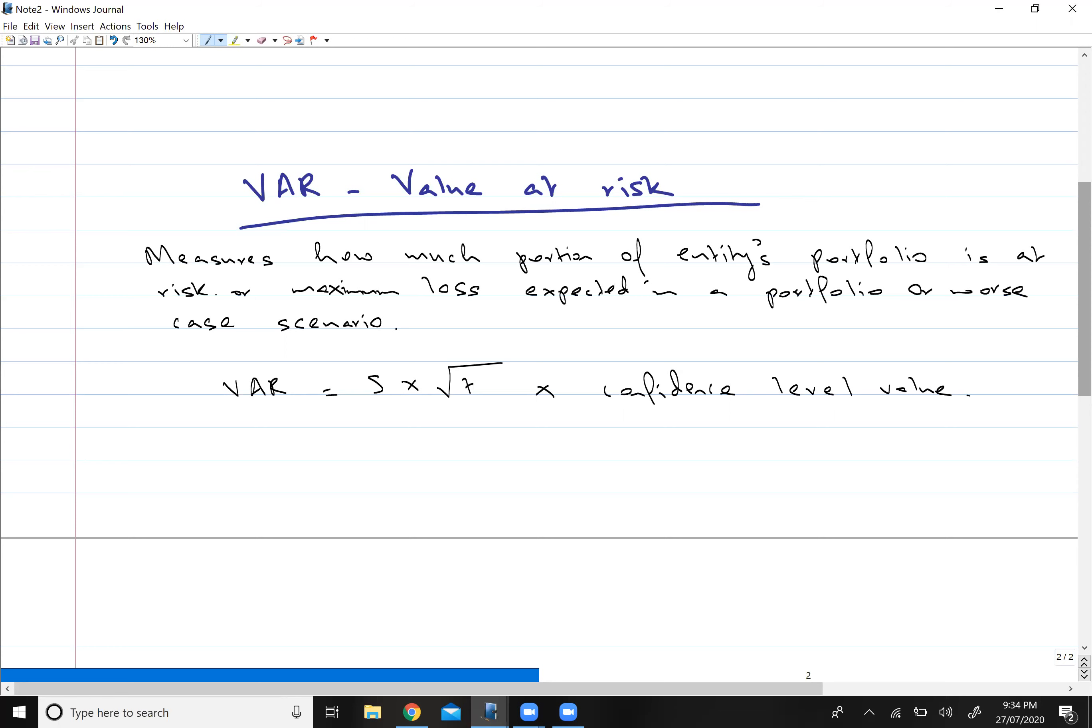What mutual funds do is they pool cash from people, then they invest those funds in different places. After that, they distribute the return to the investors. Obviously, they will keep some of the return for themselves as well.